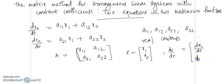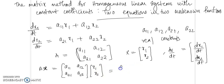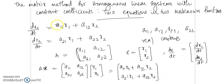That will be dx1/dt and dx2/dt. The above system can be rewritten in terms of dx/dt, A, and x. If you take the product Ax, you get [a11, a12; a21, a22]·[x1, x2] = [a11·x1 + a12·x2; a21·x1 + a22·x2]. So the right side is the product Ax and the left side is the vector dx/dt.